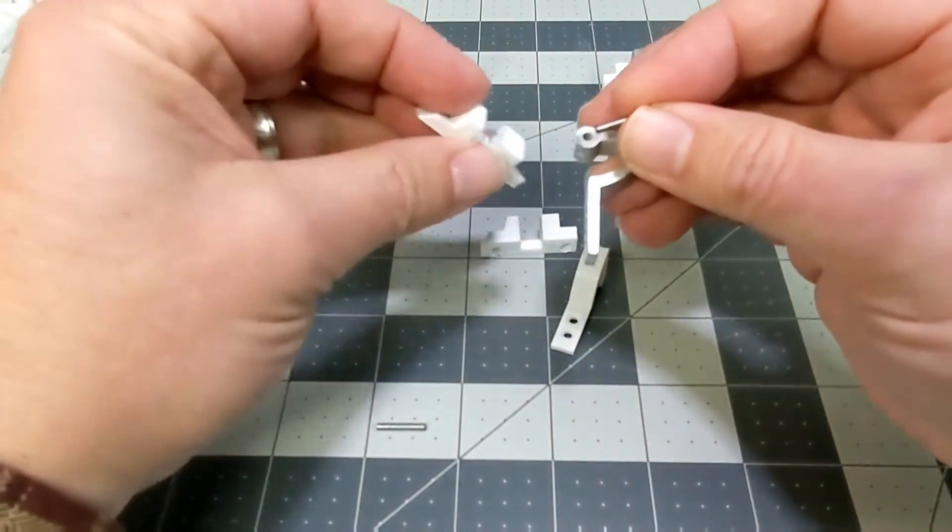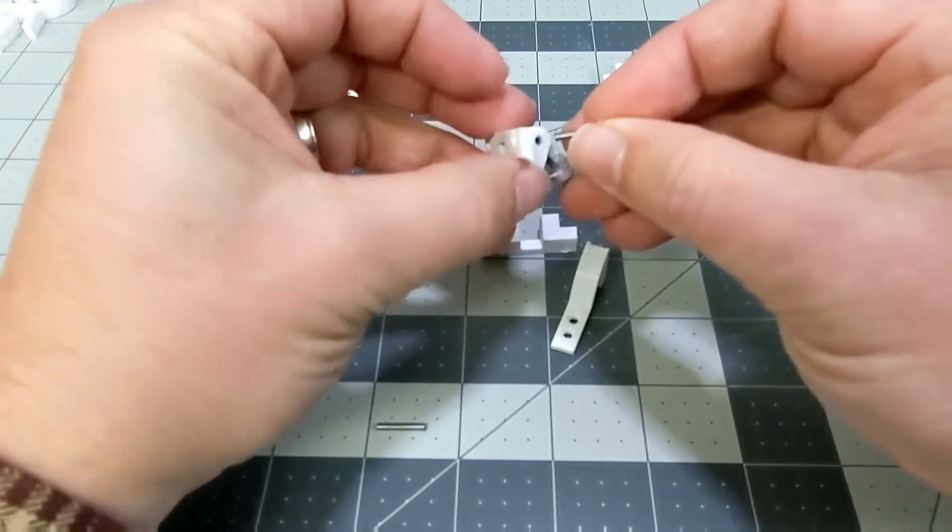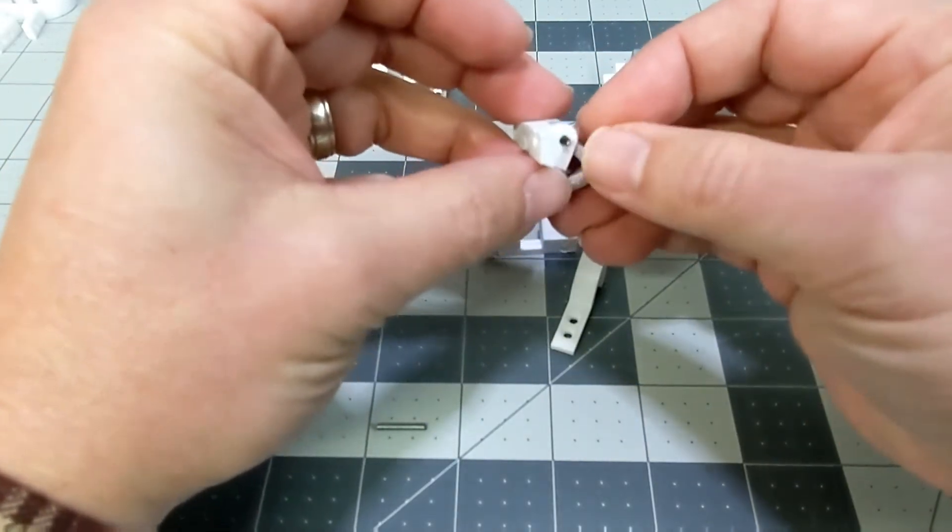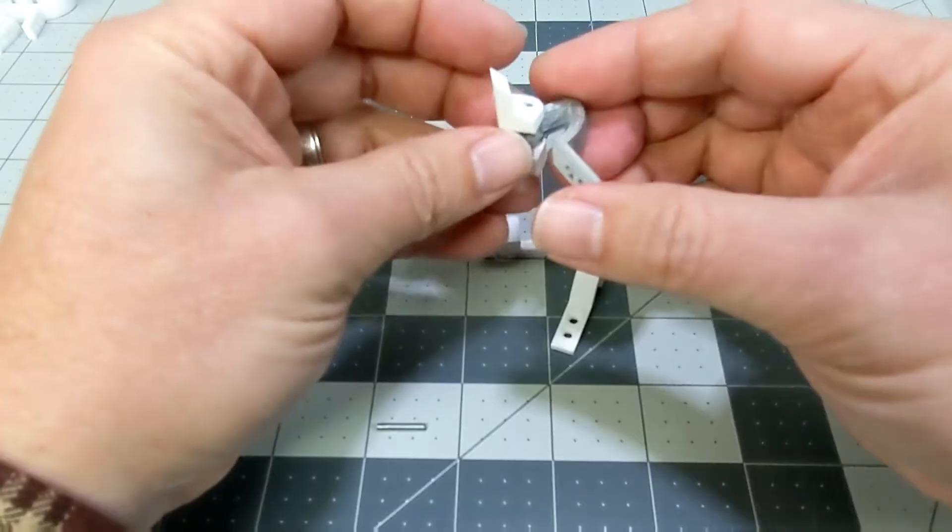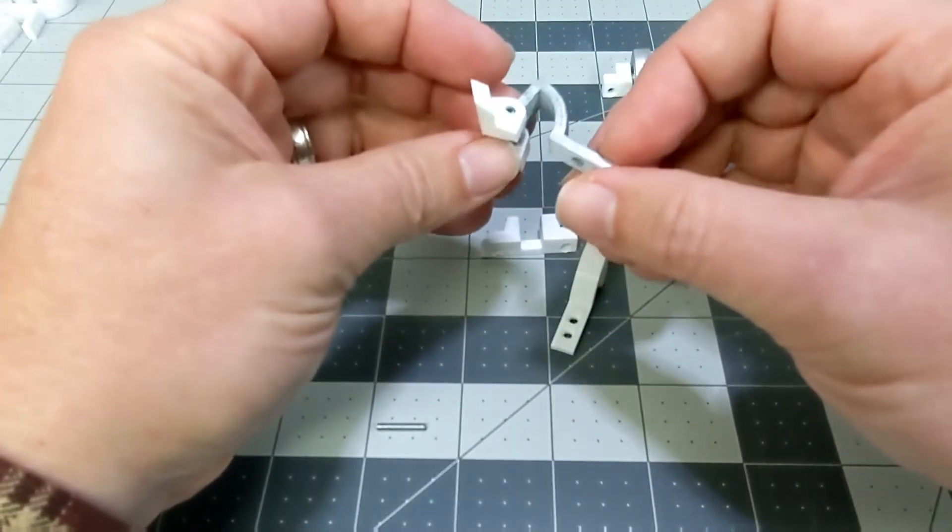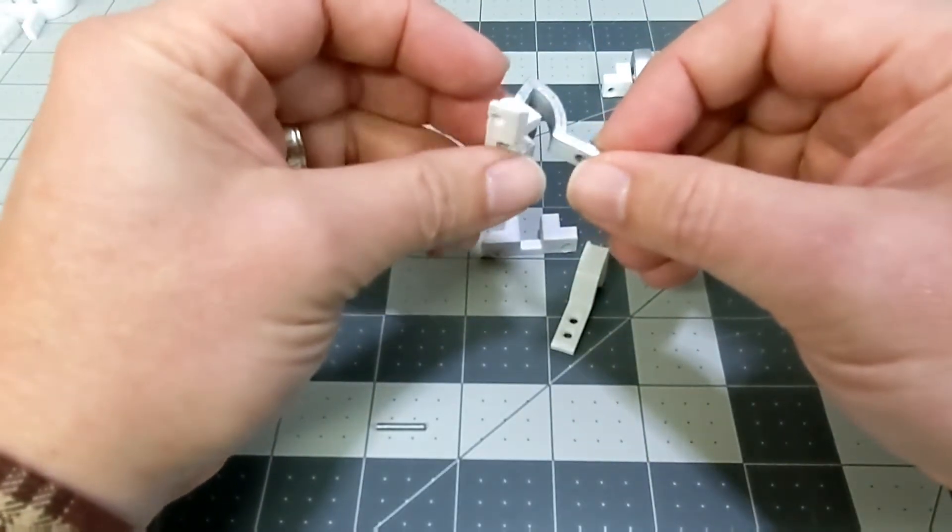To put these together, you just simply slot the hinge in and drop the pin down in there. And you want to make sure that that pin sits there nice and loosely, because trust me, you're going to be taking them back out again.